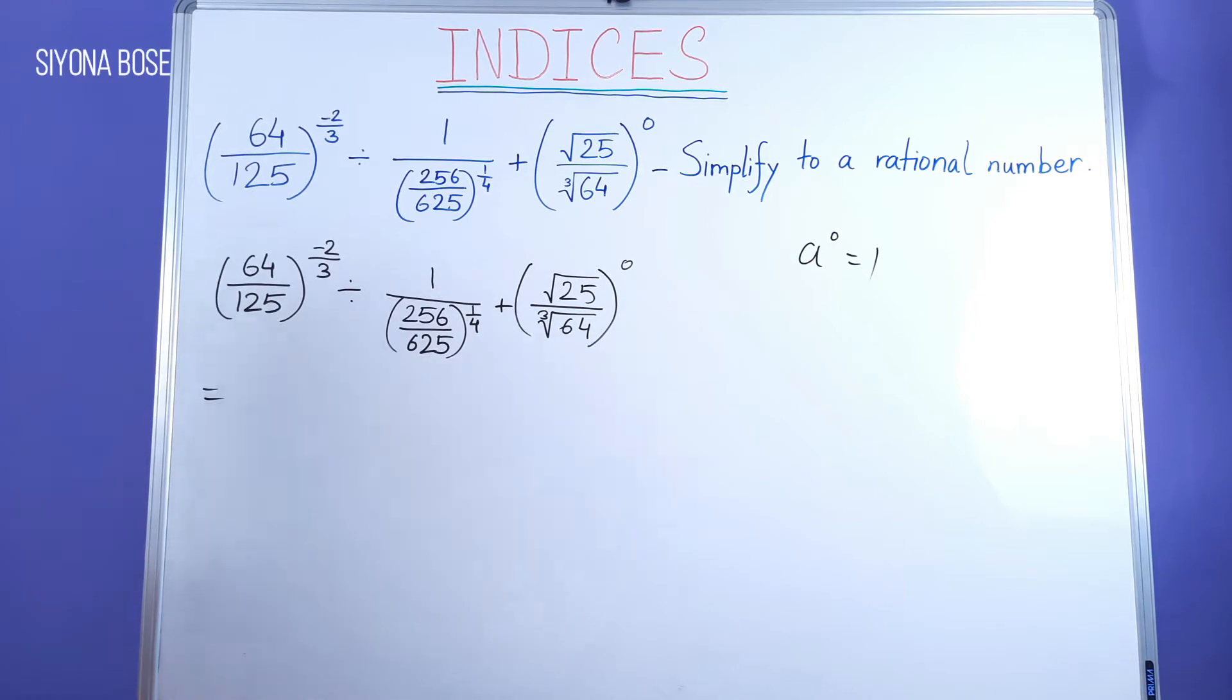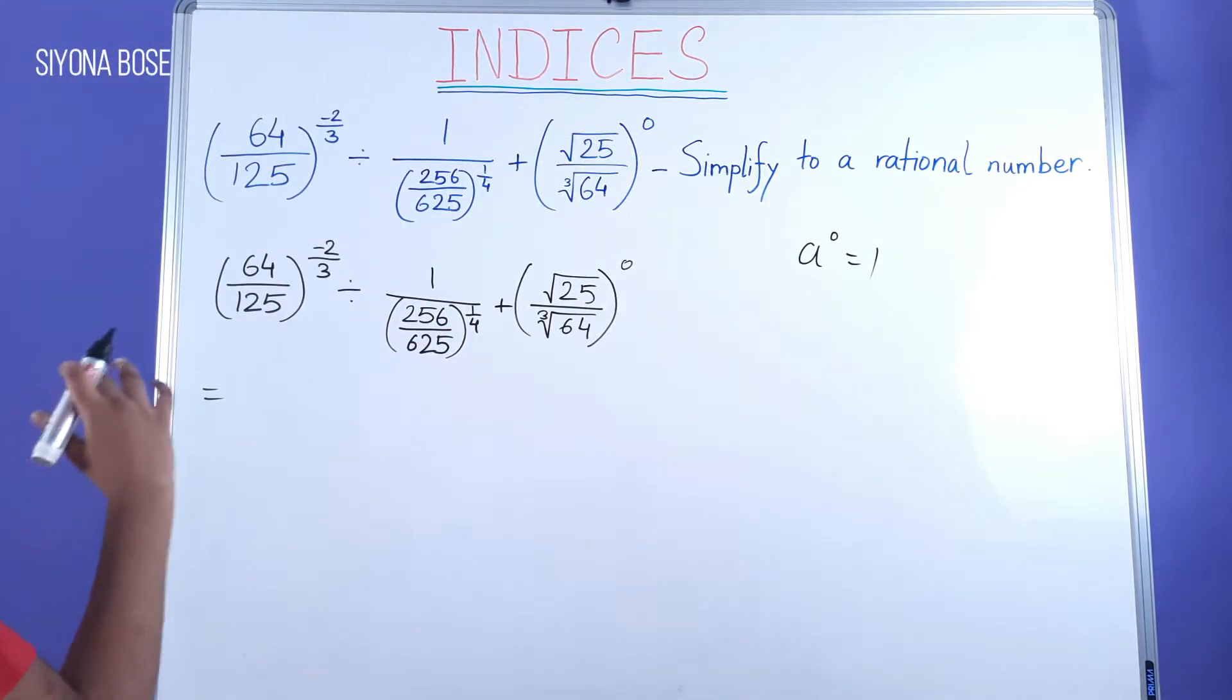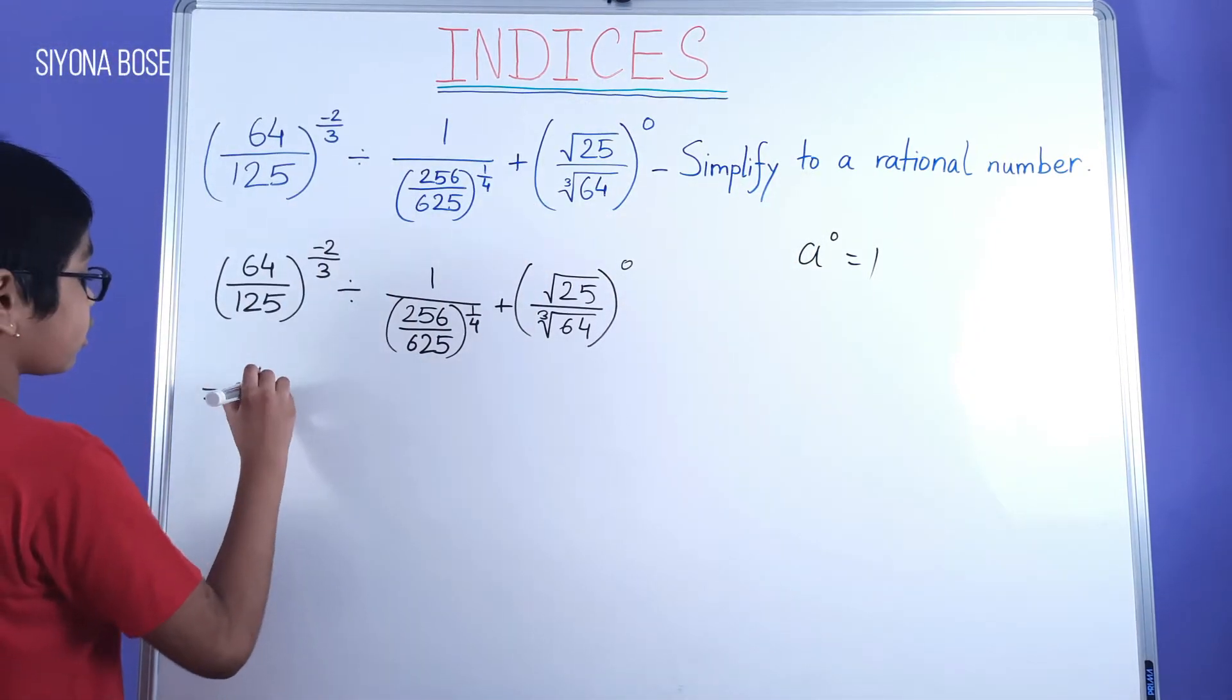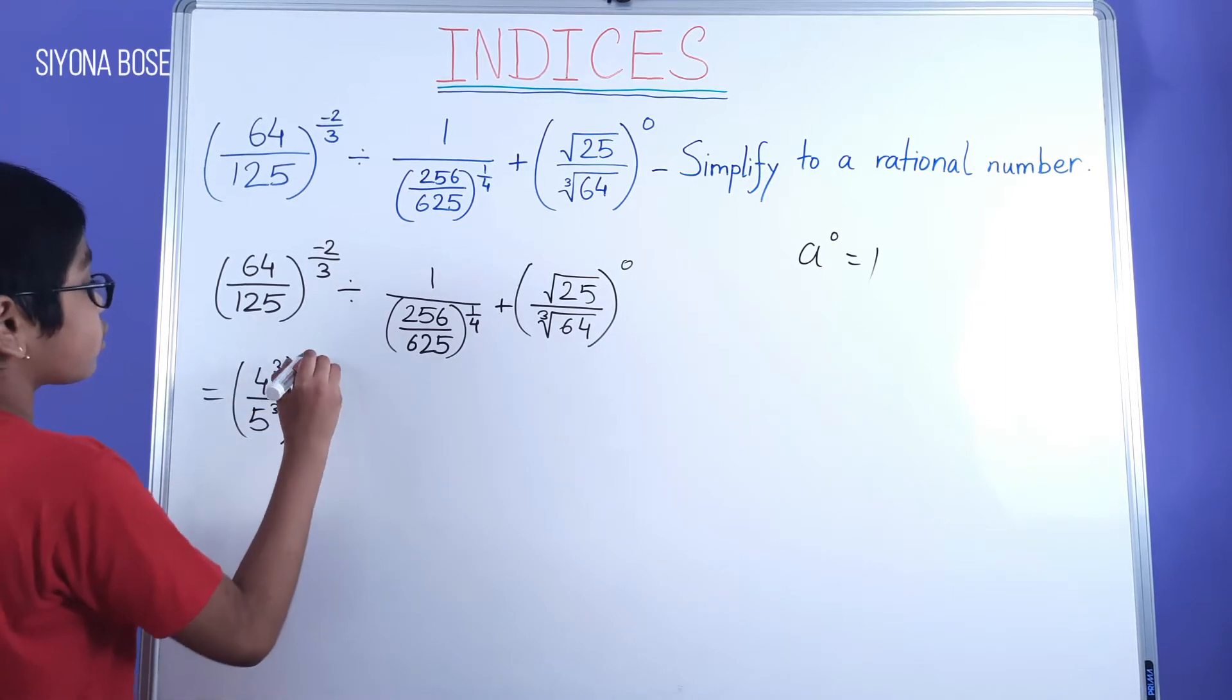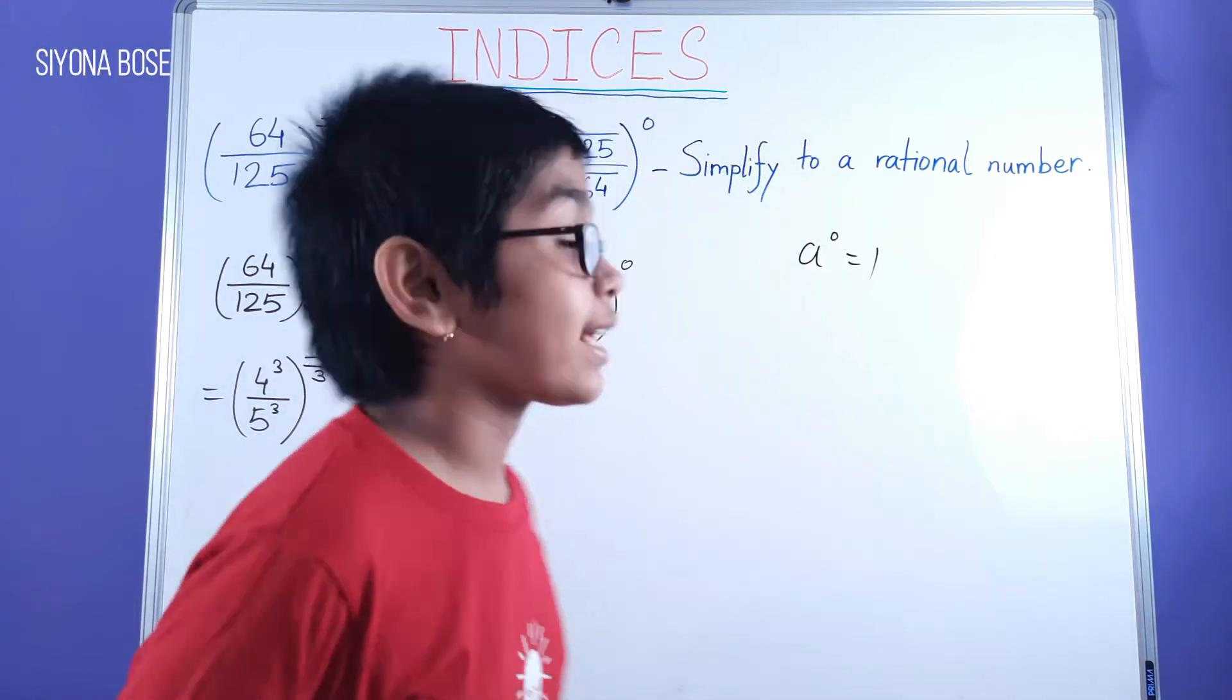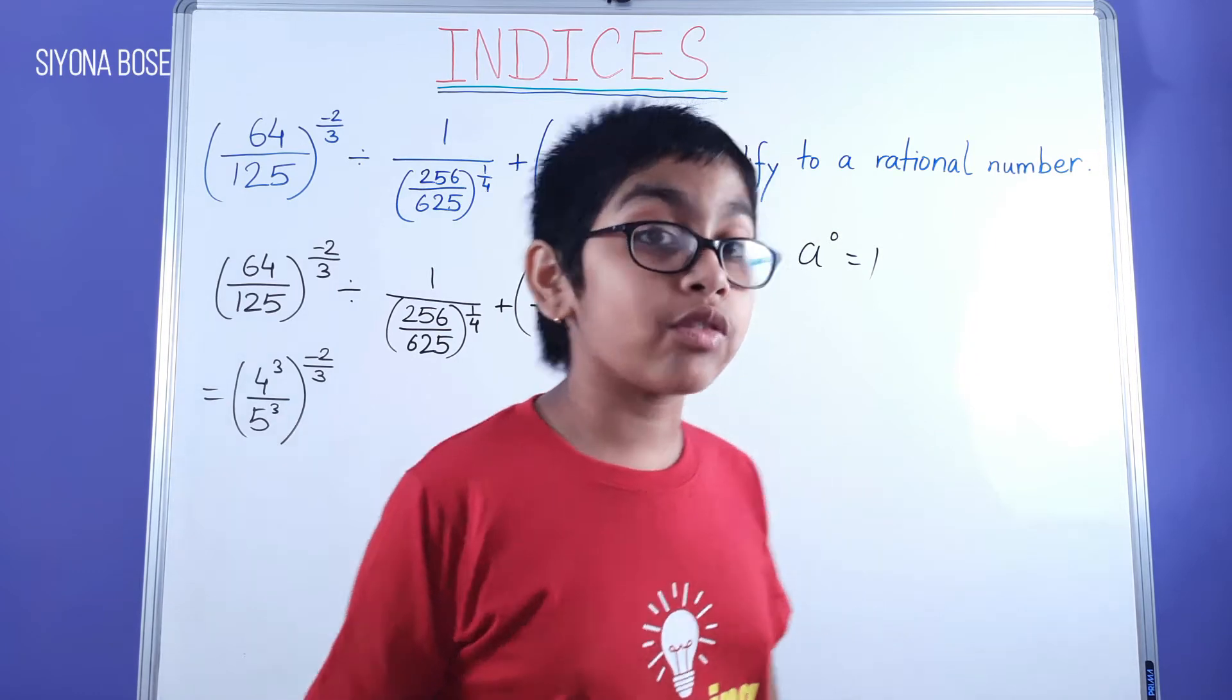And over here also, 64 can be written as 4 cube, and 125 is 5 cube. We can write it in that way. And over here, 256 can be written as 4 to power of 4, and 625 can be written as 5 to power of 4.